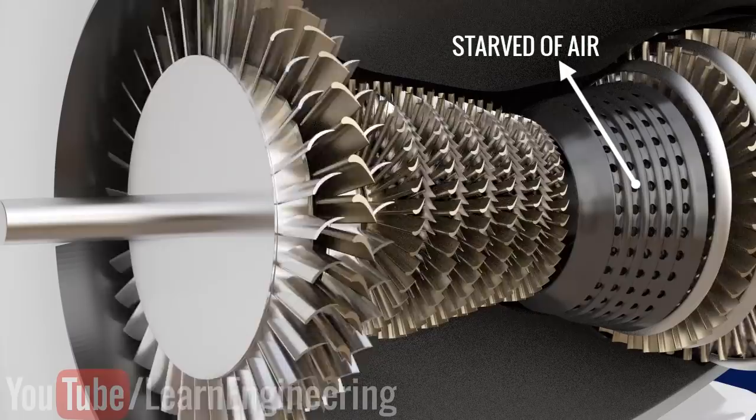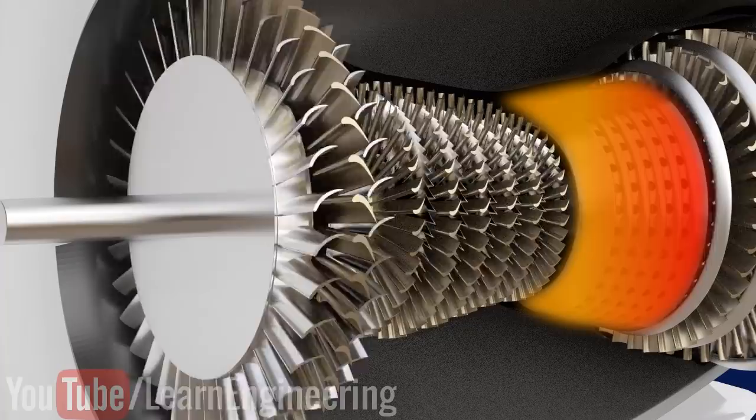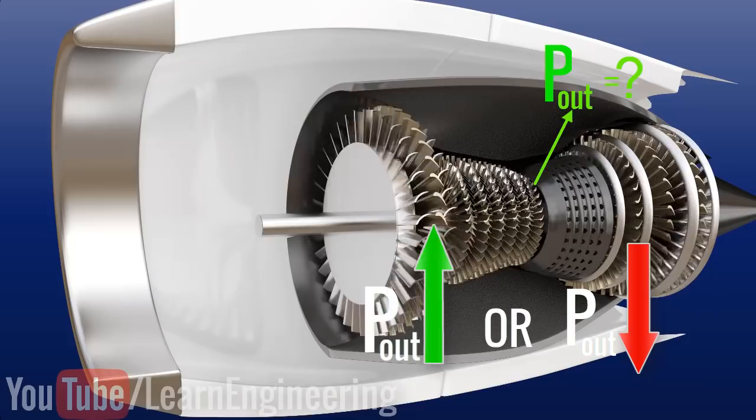This causes the combustion chamber area to suddenly be starved of air. The cooling in the combustion chamber is drastically reduced and the temperature in this section of the engine rises dramatically. The big question is what happens to the compressor outlet pressure? There are two possibilities: it can either increase or decrease. To get an answer, we should learn about the characteristics of a compressor.